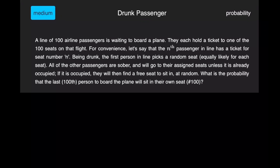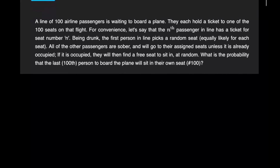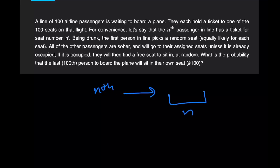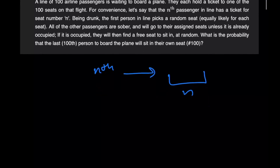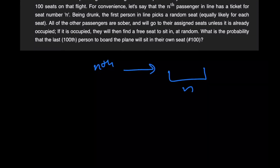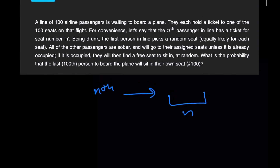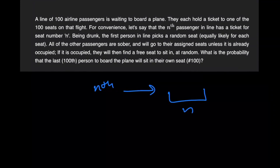So basically, to explain the problem: we've been given 100 passengers waiting to board a plane, standing in a line. They've all been given a number, and the nth passenger in line has a ticket for seat number n. So normally, the first person would sit on the first seat, the second on the second seat, and so on.